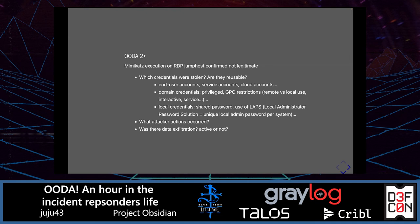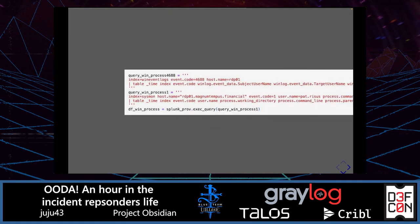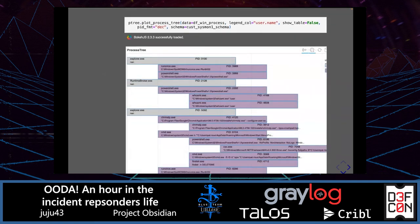We also want to know what attacker actions occurred and whether data exfiltration is active or not. Returning to our notebook to explain the queries: we try to check process activity. There are two example queries — either using Windows Event ID 4688 for native process command-line auditing, or Sysmon Event ID 1, which is an extra tool often recommended by security practitioners.